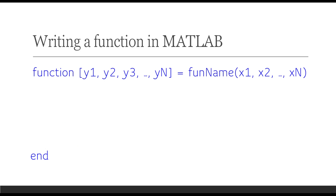In MATLAB, when we want to write a function, we use the reserved keyword 'function', then open square brackets with the list of outputs, then the equal sign, then the function name — which you can call whatever you want, but the file must share the same name. Then open parentheses with the list of inputs or arguments, and at the end the reserved keyword 'end'. What we may change is the list of output, the list of input, and the function name.